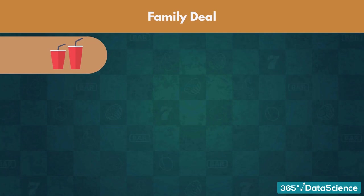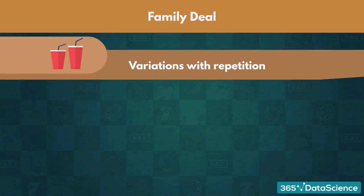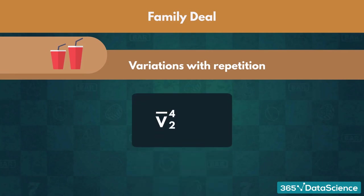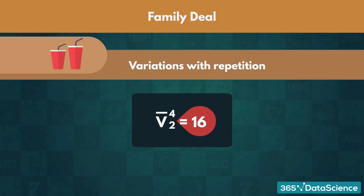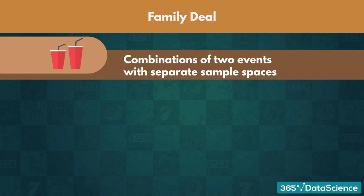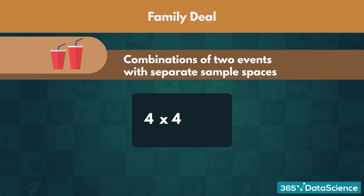Now for the drinks. You can both order the same one, so repetition is allowed. Furthermore, since it matters which drink is larger, this situation requires using variations. We apply the formula for variations with repetition, for picking 2 out of the 4 available options: 4² = 16 options for the drinks. Alternatively, you can think of these as combinations of 2 events with separate sample spaces of size 4. Either way, 4 × 4 = 16. We once again have much more variety compared to the first deal.